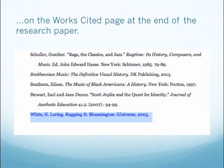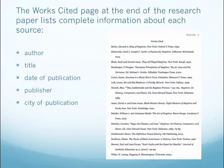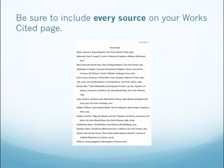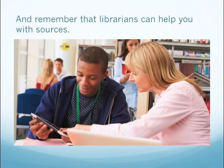The works cited page at the end of the research paper lists complete information about each source: author, title, date of publication, publisher, city of publication, and so on. You should write down this information while you're reading so that you'll have it when you need it. Be sure to include every source you used on your works cited page, and remember that librarians can help you — I go to librarians for help all the time.